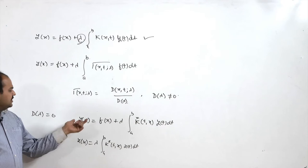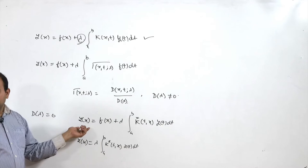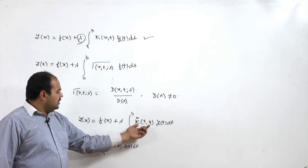The transpose equation is defined as y(x) = f(x) + λ∫[a to b] k*(t,x) y(t) dt, where k* is the conjugate transpose of k(x,t). This is known as the transpose equation, or sometimes the adjoint equation, of the original equation.